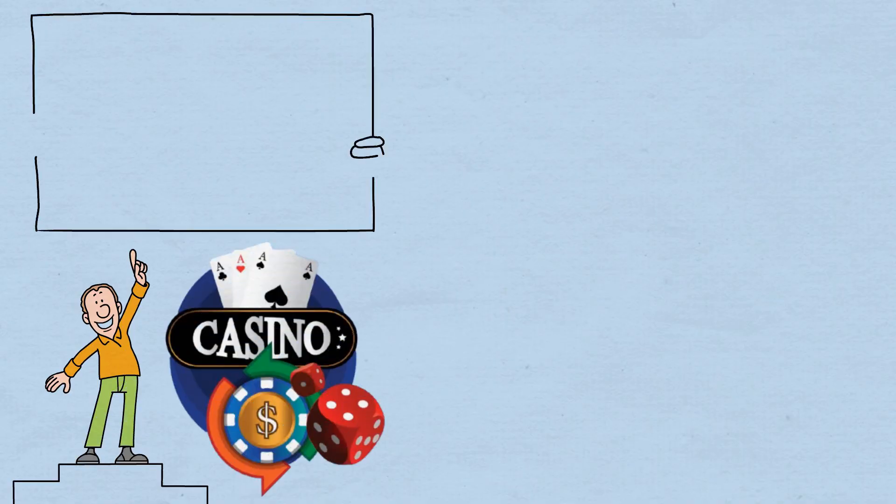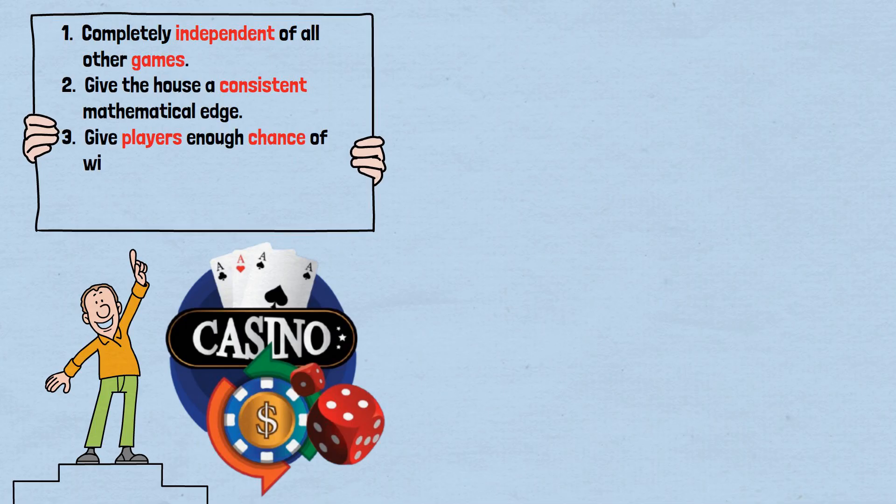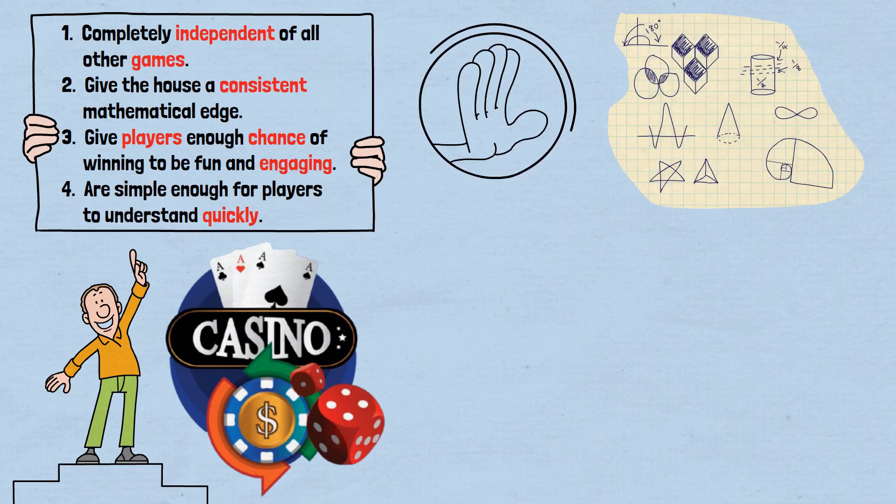It's surprisingly difficult to create games that are: (1) completely independent of all other games, (2) give the house a consistent mathematical edge, (3) give players enough chance of winning to be fun and engaging, and (4) are simple enough for players to understand quickly. Any new game must pass rigorous mathematical analysis to ensure it can't be combined with existing games to create unexpected advantages for players.